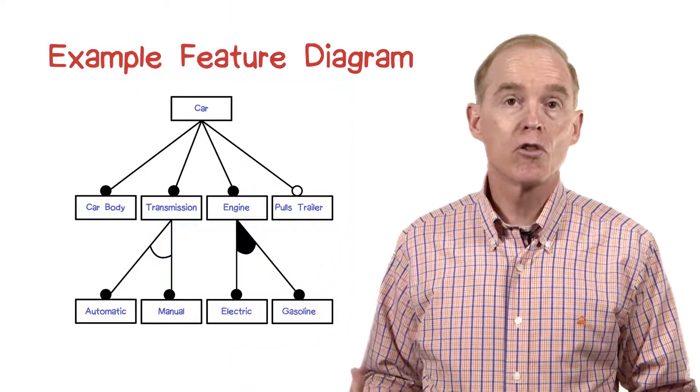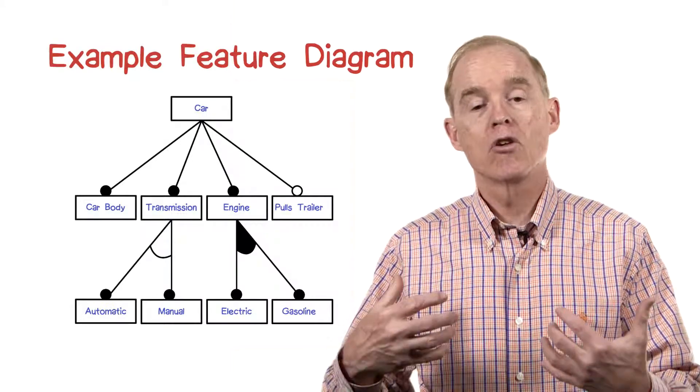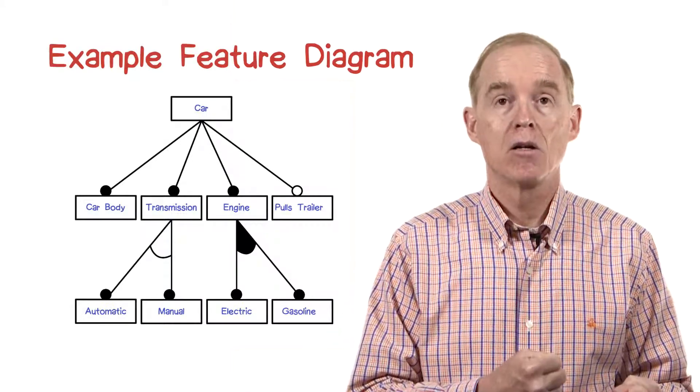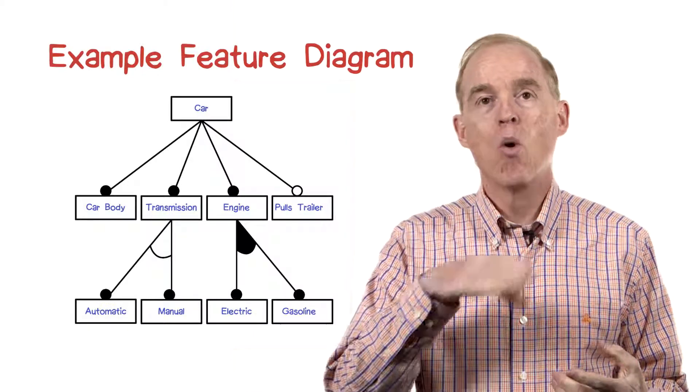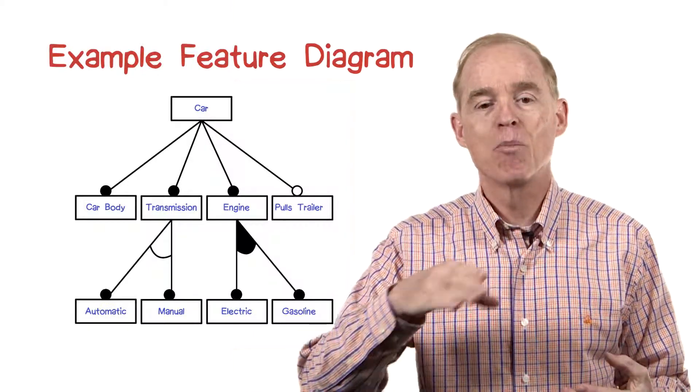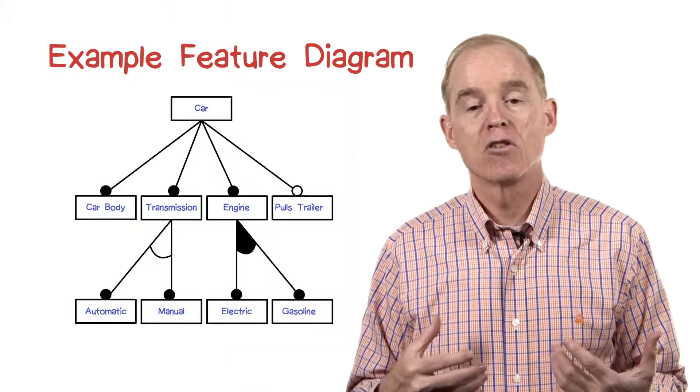Features can have sub-features. So a transmission can have an automatic transmission feature or a manual transmission feature. The or that I just said is indicated by that open arc connecting the two lines coming out of the transmission. Similarly, there are two kinds of engines, electrical and gasoline.